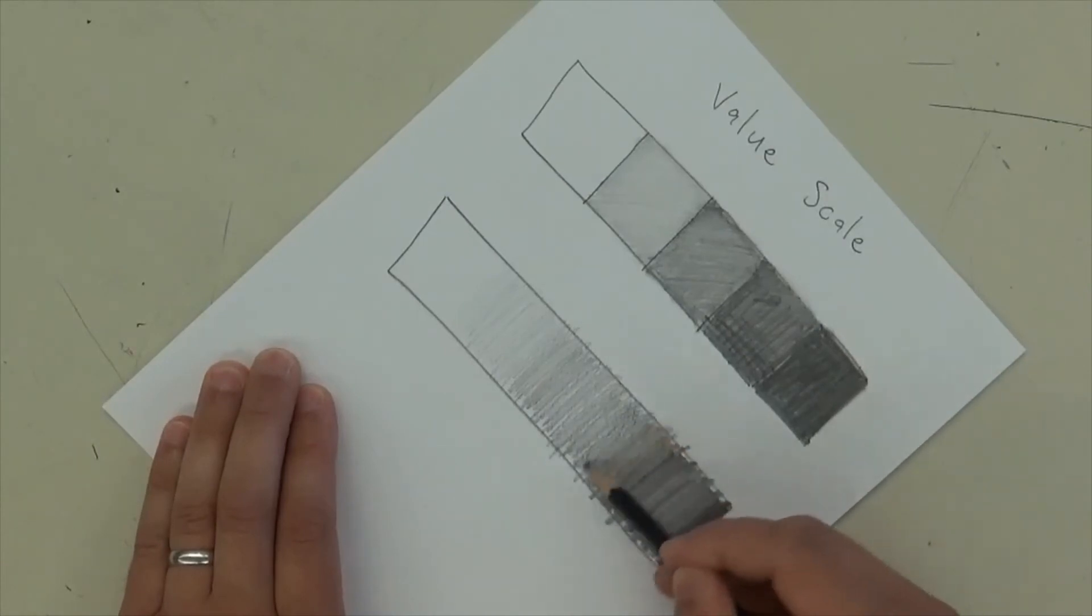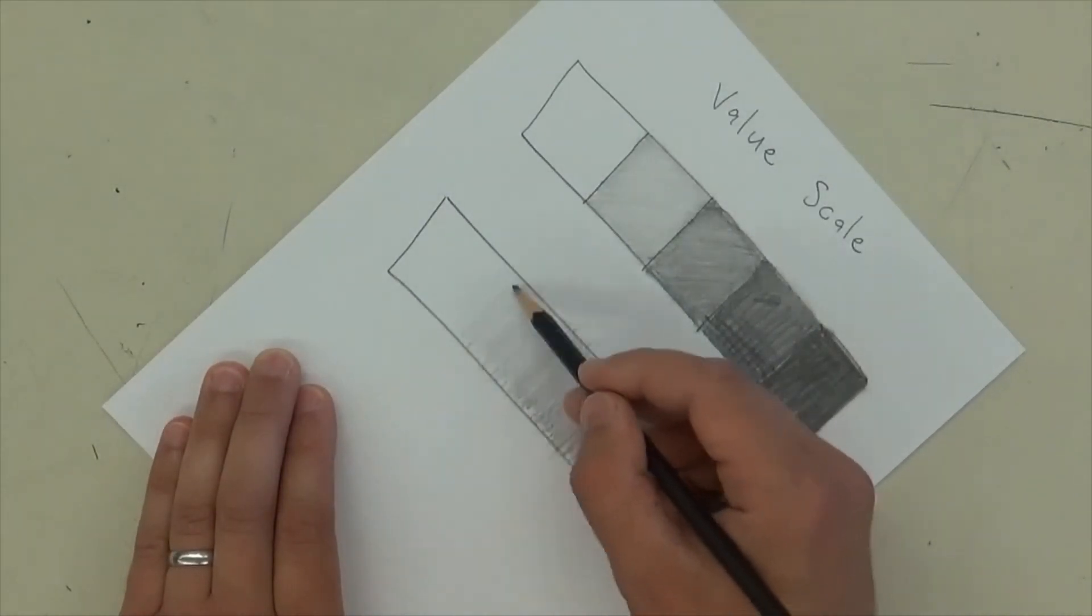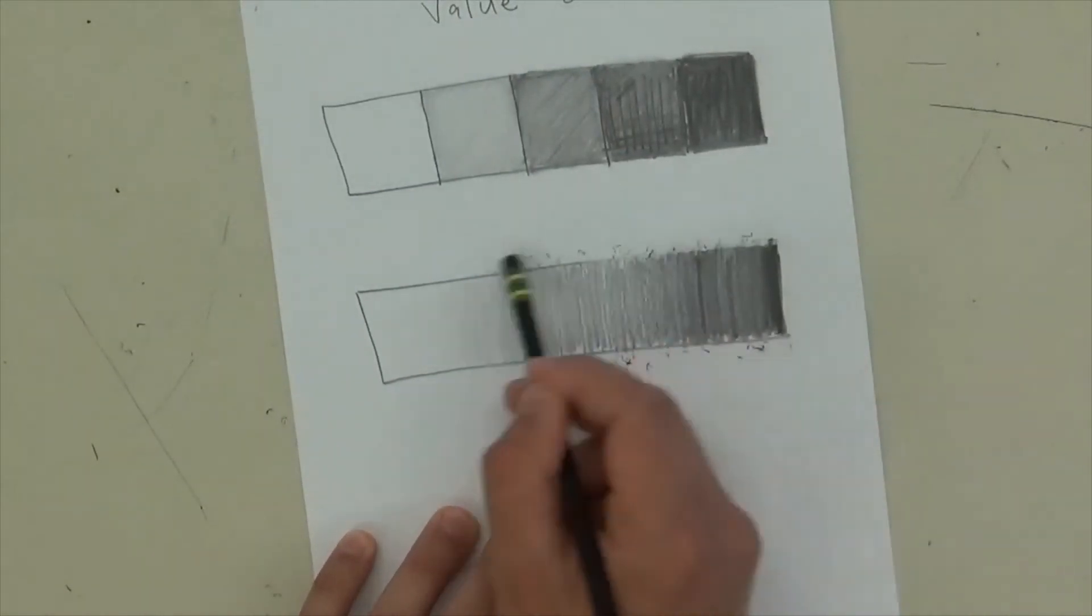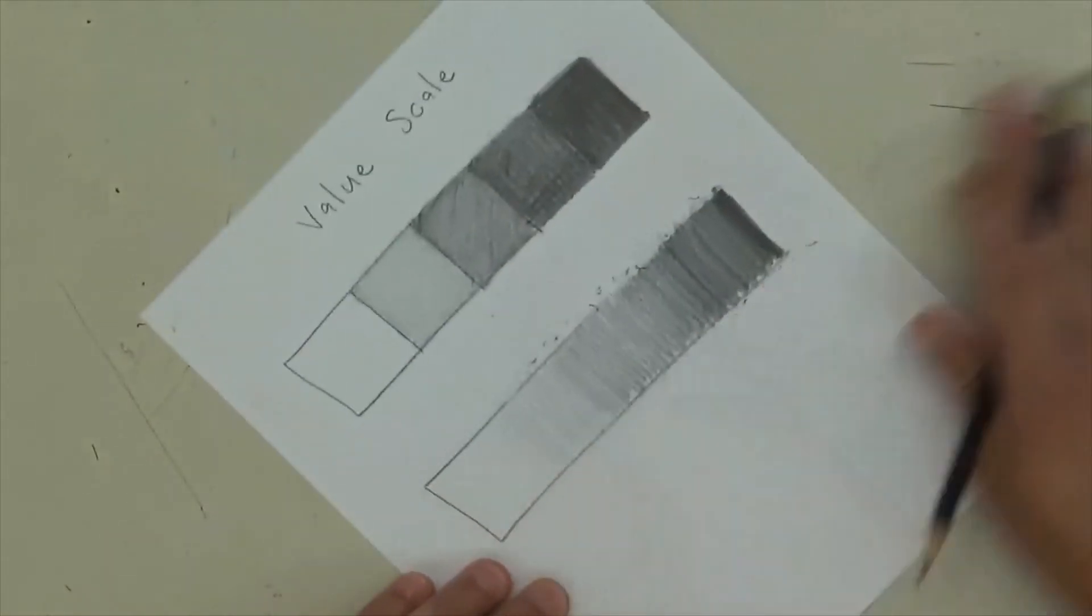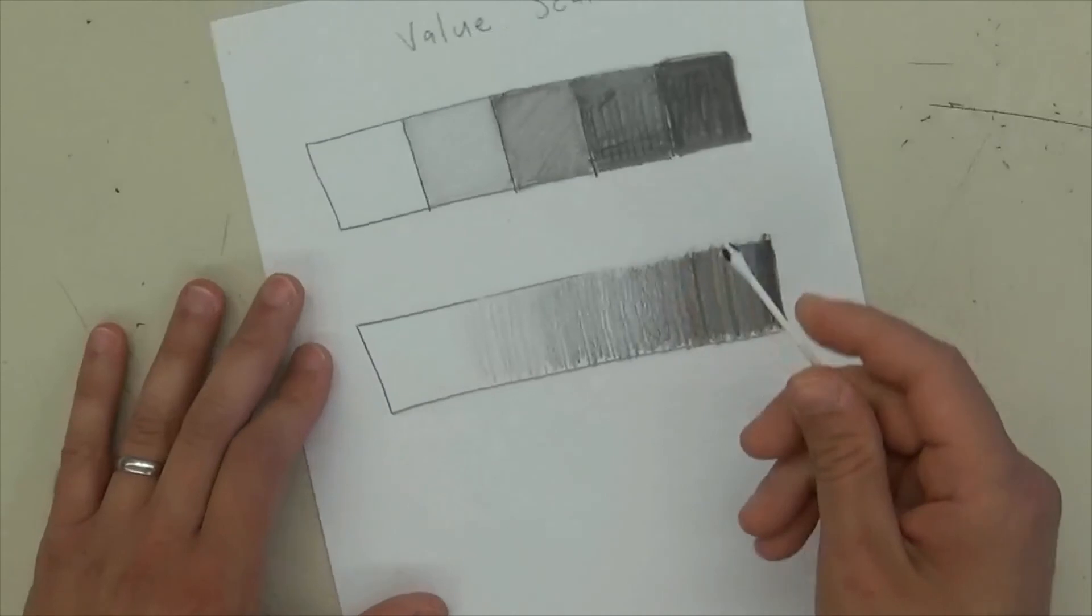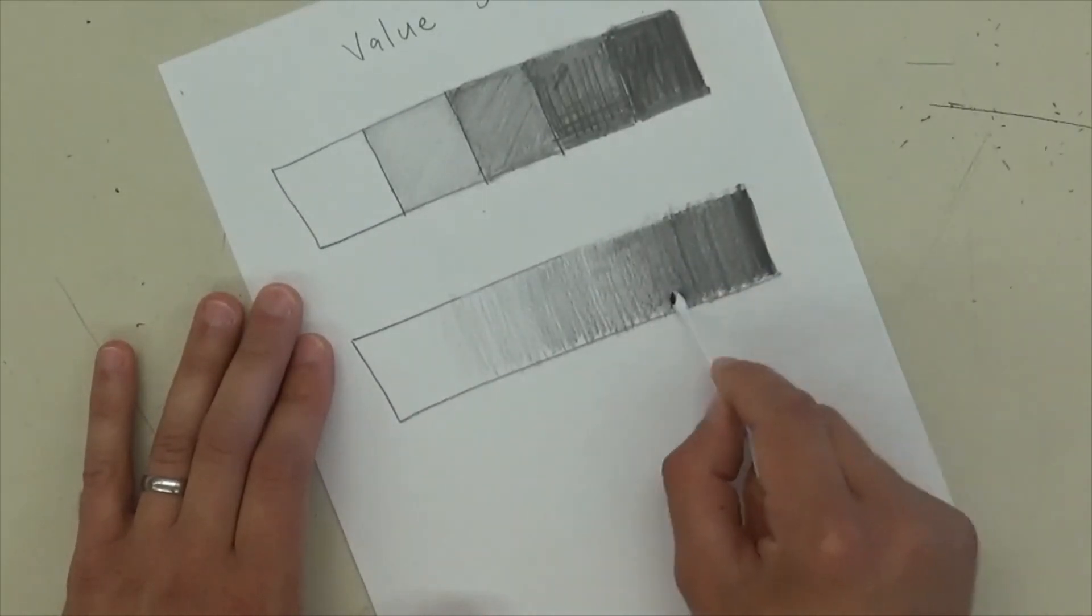And then you can go back up through the other way and just kind of fix little things as you go just to make it look a little bit better. And then I like to go through and clean up the edges with the eraser so it looks a little nicer. And then you can take your Q-tip and just blend the whole thing. And get rid of the lines.